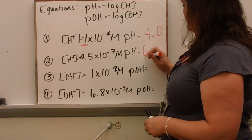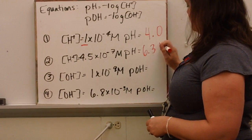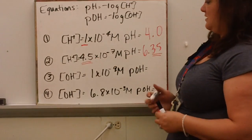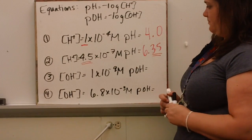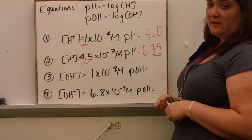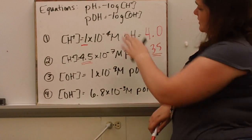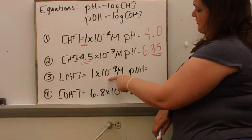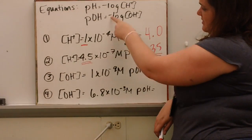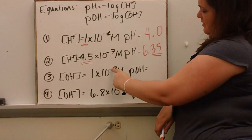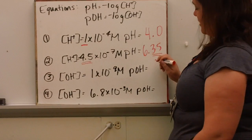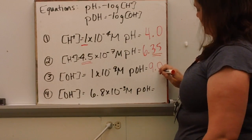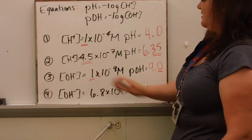Why two decimal places? The number of places past the decimal must equal the number of significant figures in the concentration. We can do the same for hydroxide: the negative log of the hydroxide concentration — the log gives us negative 9, and changing the sign gives pOH = 9, recorded as 9.0 because there was one significant digit.